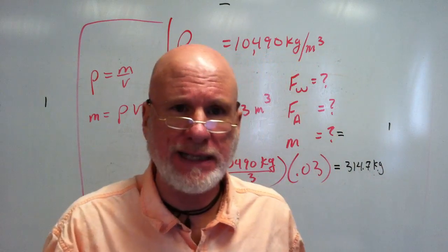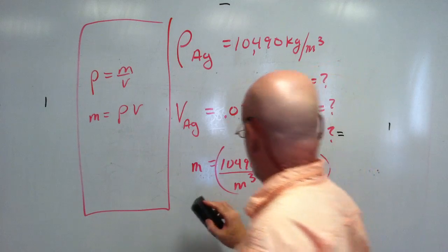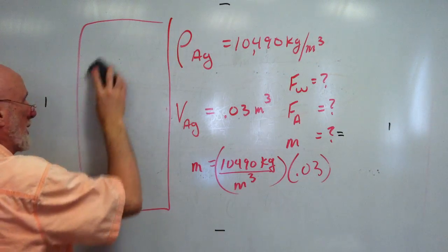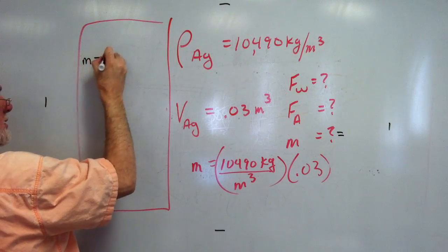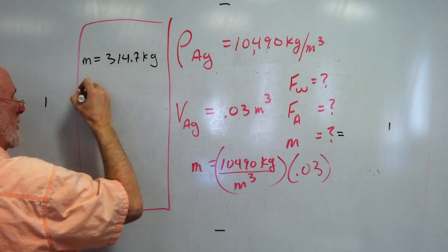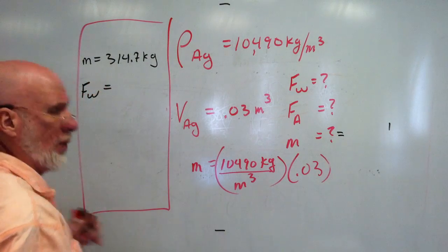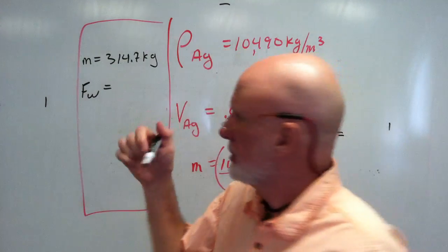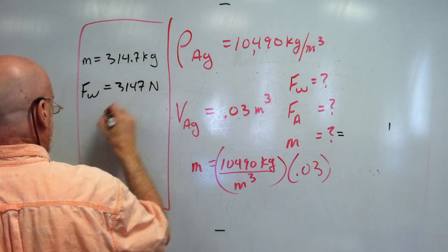The mass is three hundred fourteen point seven kilograms. The weight is going to be ten times that — mg — so it'll be three thousand one hundred forty-seven newtons.